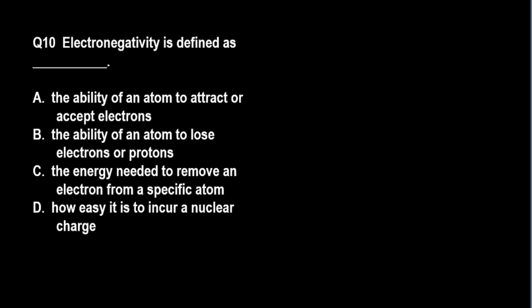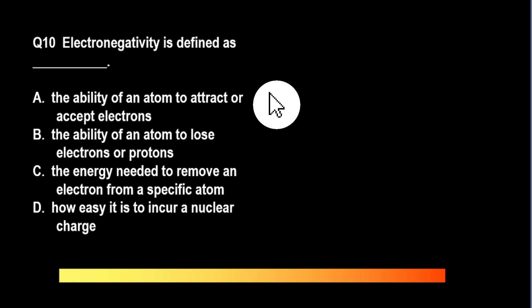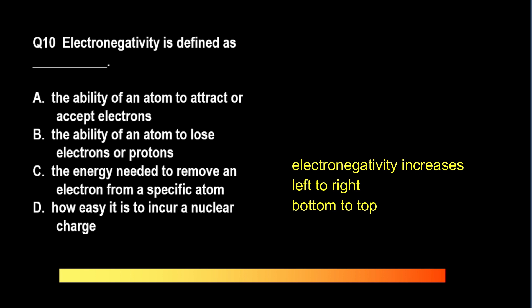Question number 10 — Electronegativity. Electronegativity pertains to the ability of an atom to hold electrons tightly. For this property, we again disregard the noble gases. The pattern is that electronegativity increases left to right, and it increases bottom to top. Remember that fluorine has the highest electronegativity. A smaller atom like fluorine, with more protons for its energy level — or higher effective nuclear charge — will hold electrons best.